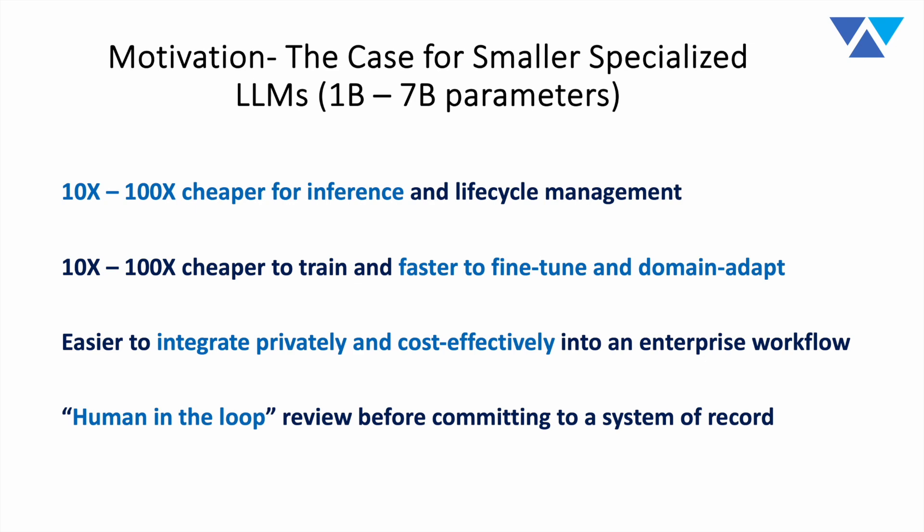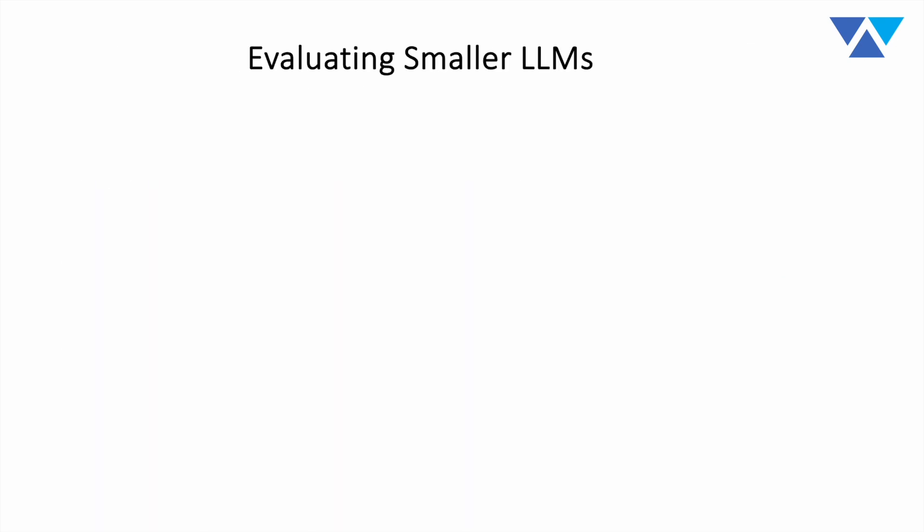In almost any RAG automation scenario we've seen, there's still going to be a human-in-the-loop review before any output from the LLM gets committed to a system of record. As long as that's a step in the process, you have to look at the total cost of ownership and total productivity value holistically. Even if you lose a point or two of accuracy — even if the SUV isn't as fast as the sports car — any small accuracy differences will be picked up in the human-in-the-loop process. That's why open source models in the 1 billion to 7 billion parameter range are much more practical, provided they deliver meaningfully accurate results.